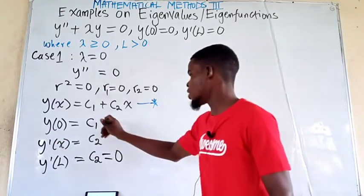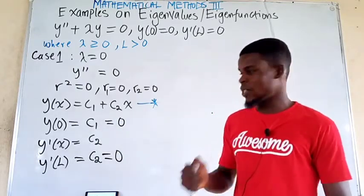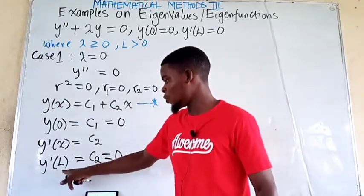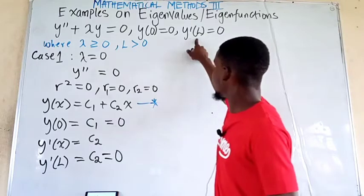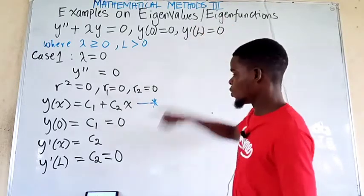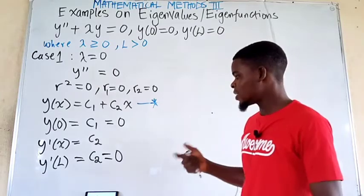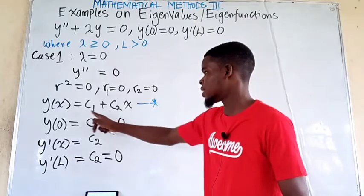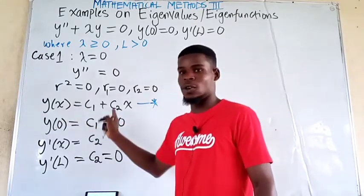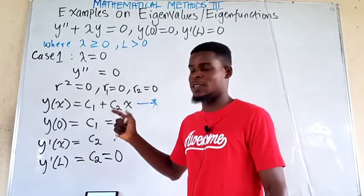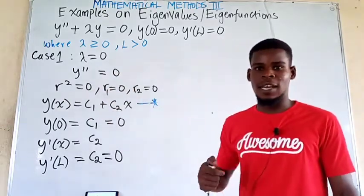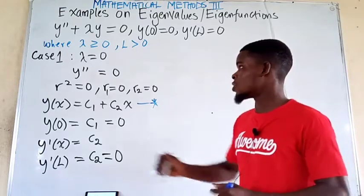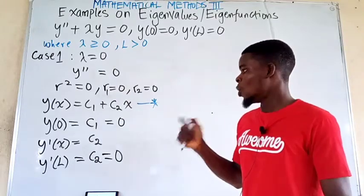From y evaluated at 0 equals 0 we get c1 equals 0, and from y prime evaluated at l equals 0 we get c2 equals 0. Both arbitrary constants are zero, giving a trivial solution. This means lambda equals 0 is not an eigenvalue of this problem.